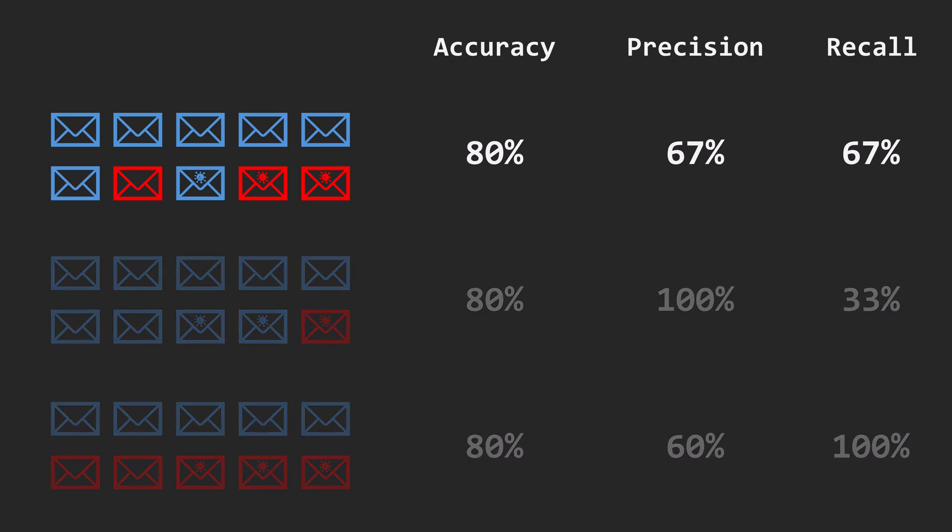Using the 1st model as a mailbox spam detector, 67% precision means that some regular mails will land in the spam folder, and we will have to check this spam folder from time to time to look for them.